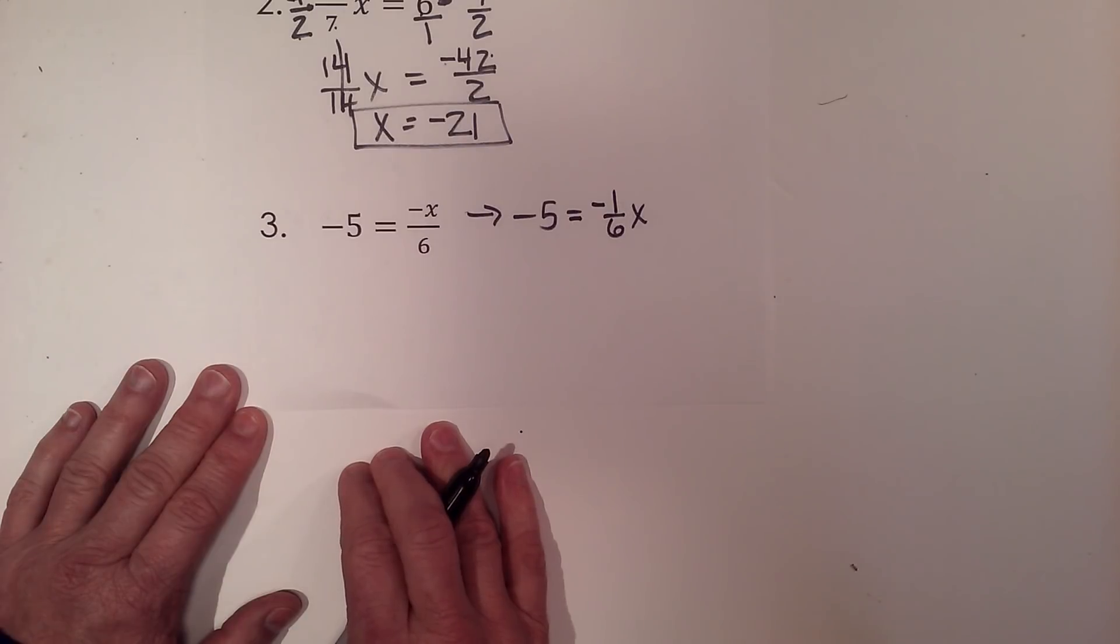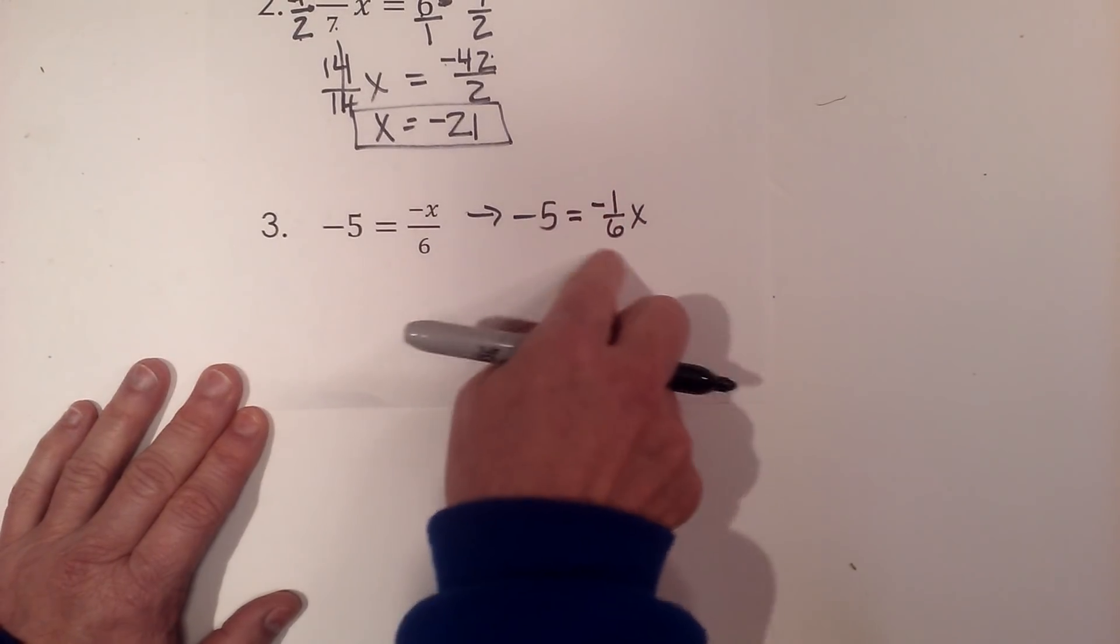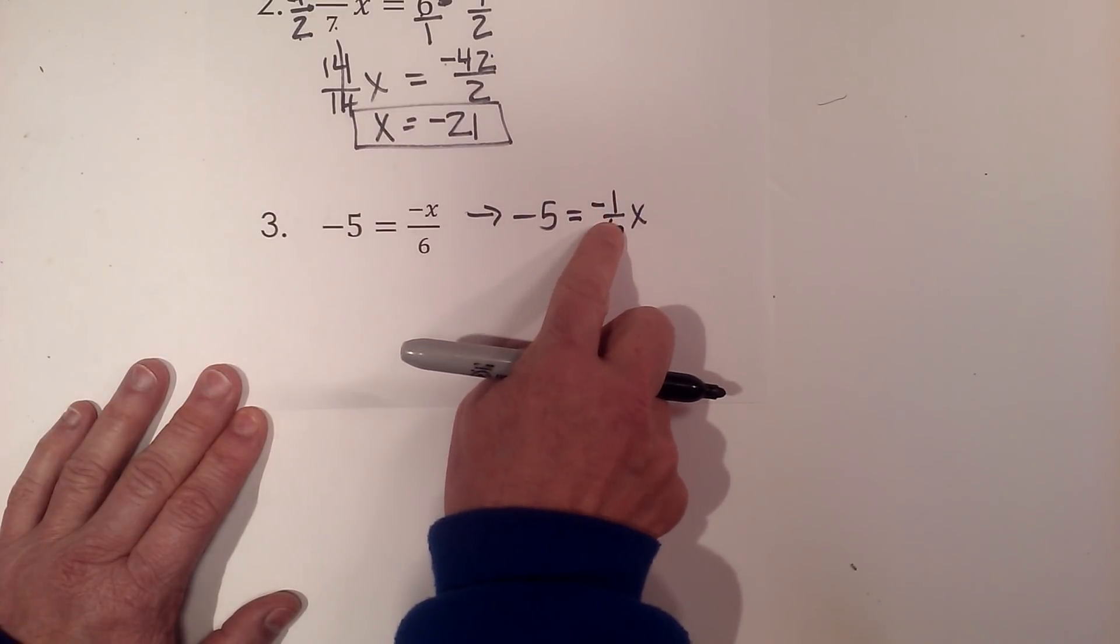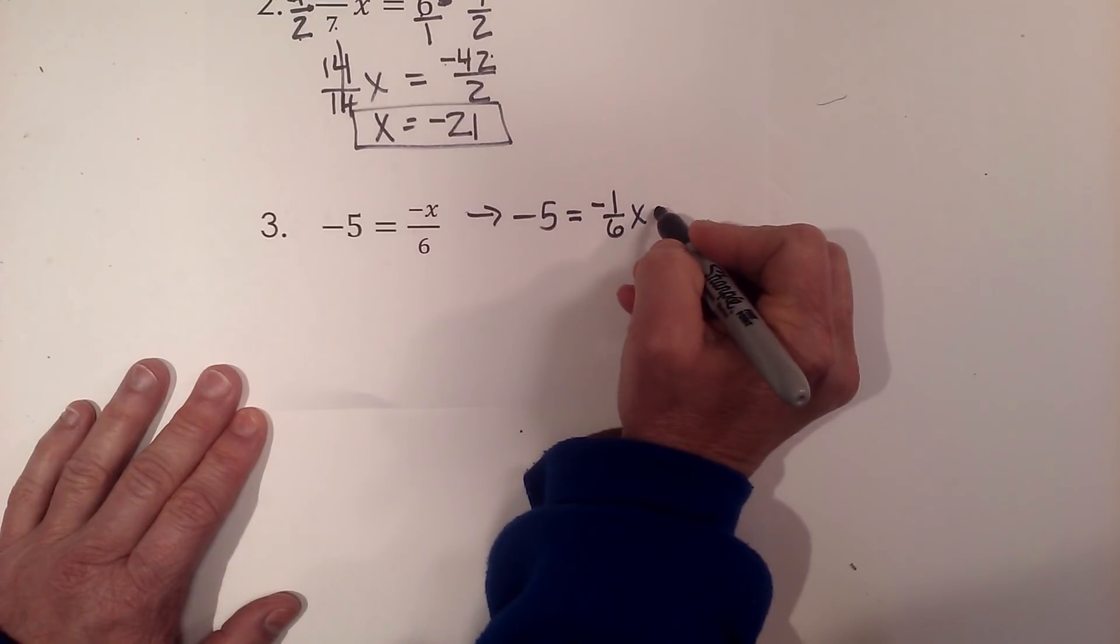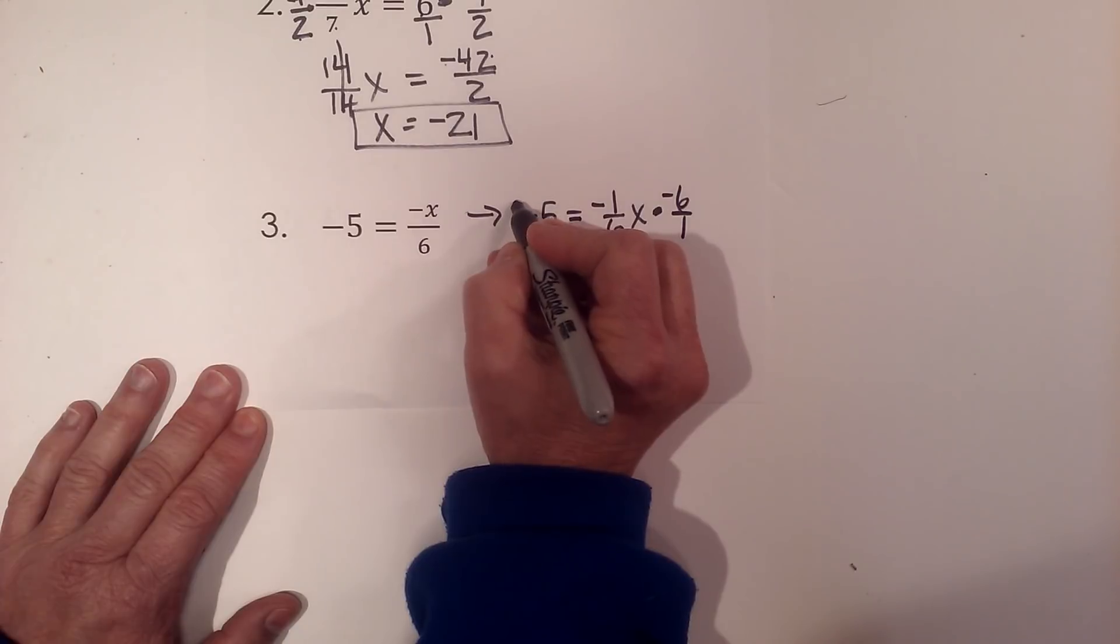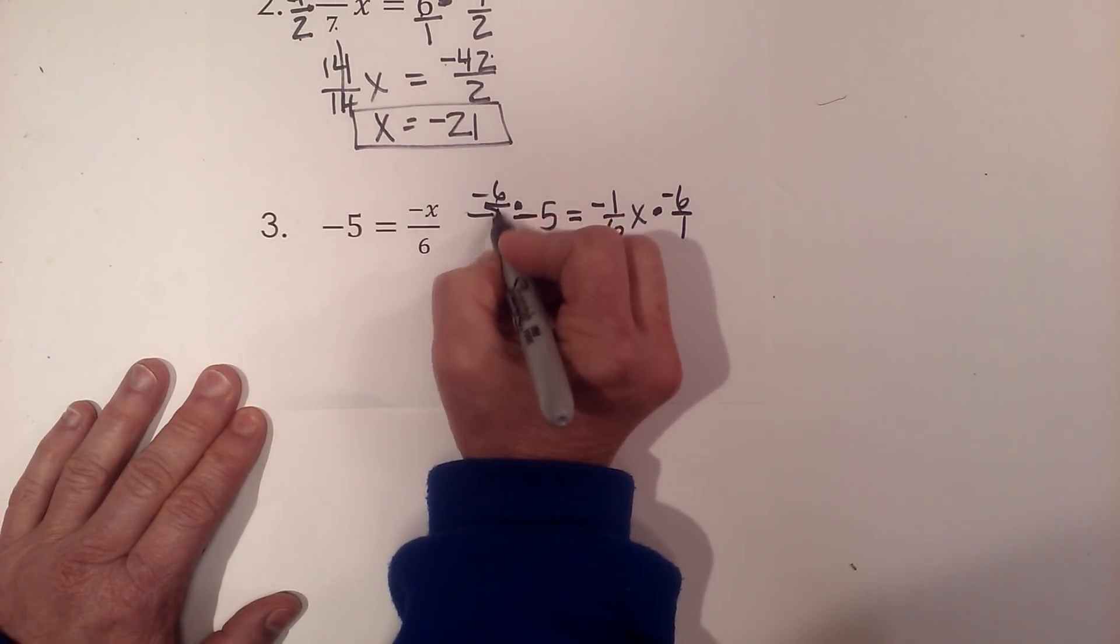I'm going to multiply by the reciprocal of the fraction because we're trying to get the x by itself. Even though it's on the right side we still treat it the same. So I'm going to multiply by negative six over one, and I'm going to multiply this negative five by negative six over one.